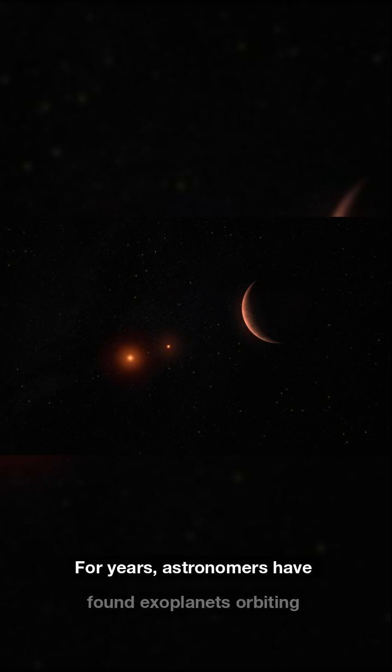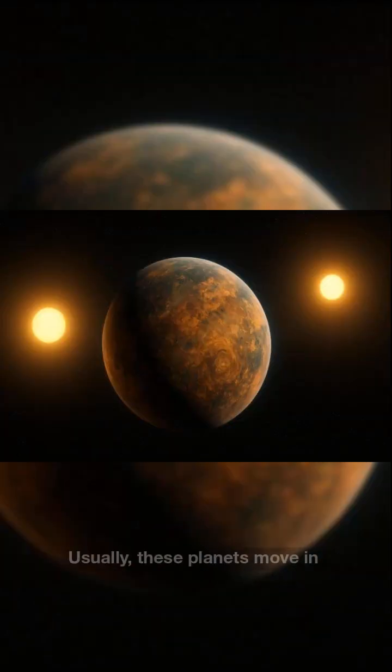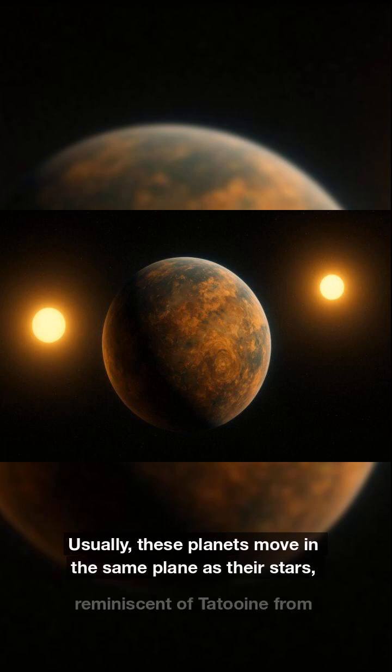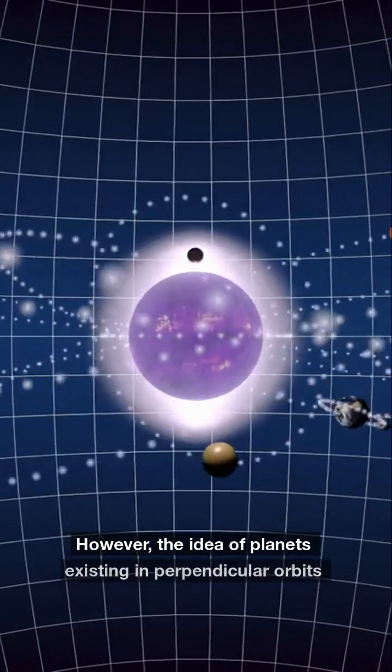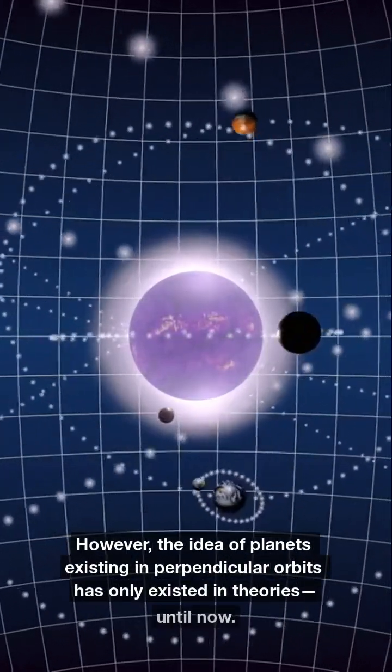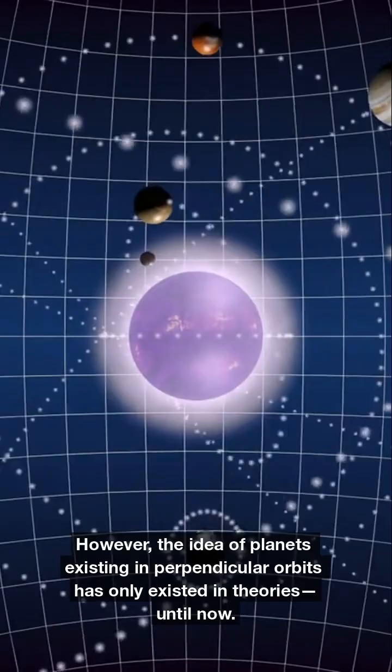For years, astronomers have found exoplanets orbiting multiple stars. Usually, these planets move in the same plane as their stars, reminiscent of Tatooine from Star Wars. However, the idea of planets existing in perpendicular orbits has only existed in theories, until now.